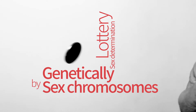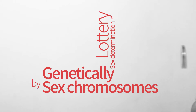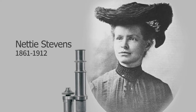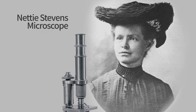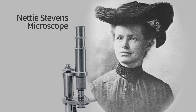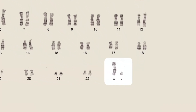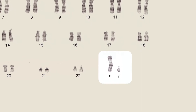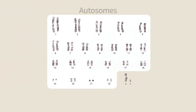In many animals, sex is determined genetically by sex chromosomes. These chromosomes and their role in sex determination were discovered by Nettie Stevens. In mammals and many other groups, sex chromosomes are called X and Y, and other chromosomes are called autosomes.